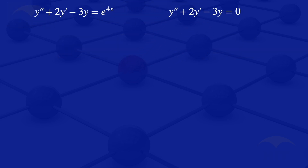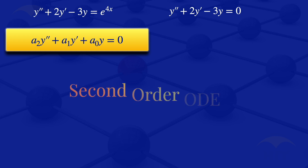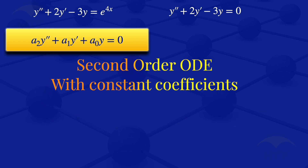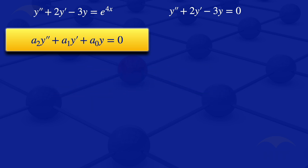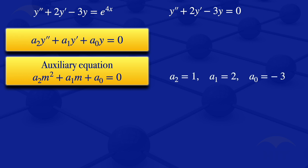We see that the homogeneous second order ODE is of the form a2·y'' + a1·y' + a0·y = 0. This is a second order ODE with constant coefficients. To solve it, we first find the auxiliary equation of the form a2·m² + a1·m + a0 = 0. Comparing, we see that a2 = 1, a1 = 2, and a0 = -3.